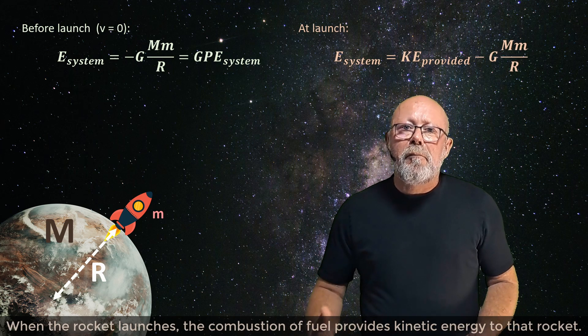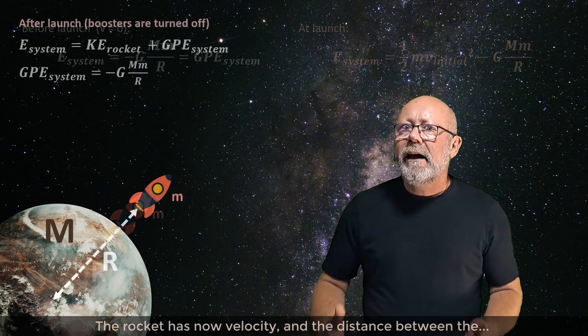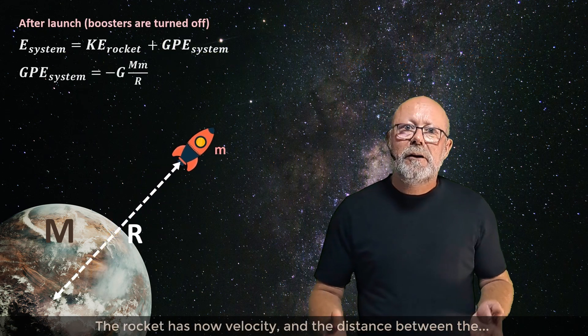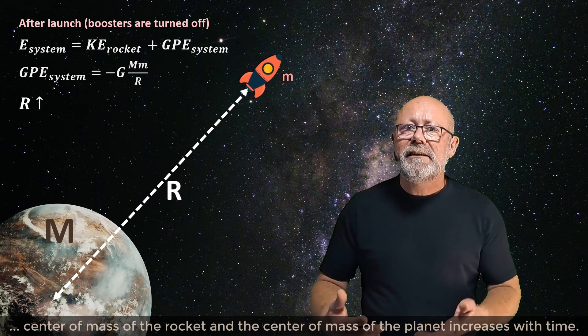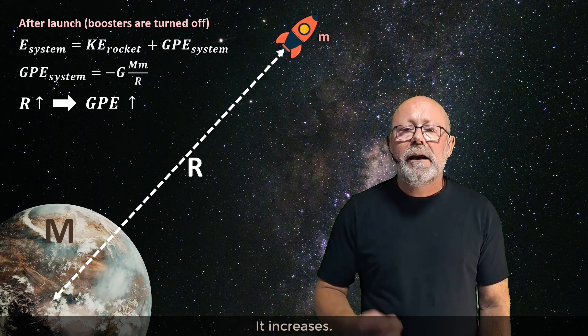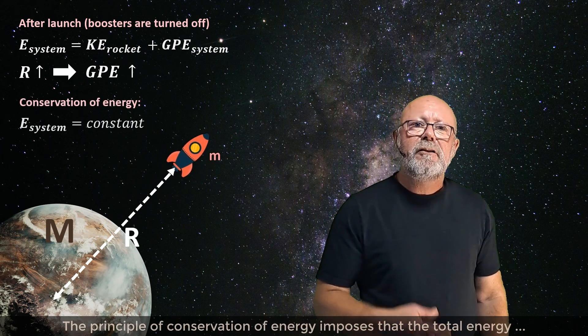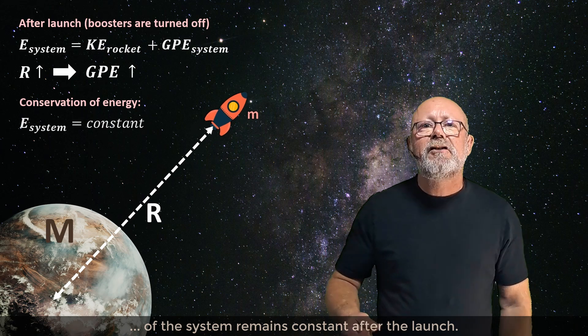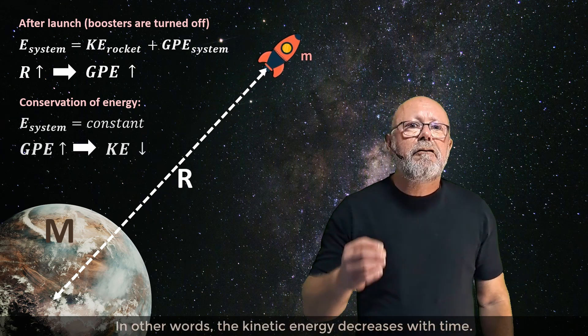When the rocket launches, the combustion of fuel provides kinetic energy to that rocket. The rocket has now velocity, and the distance between the center of mass of the rocket and the center of mass of the planet increases with time. So the gravitational potential energy becomes less negative. It increases. The principle of conservation of energy imposes that the total energy of the system remains constant after the launch. In other words, the kinetic energy decreases with time.